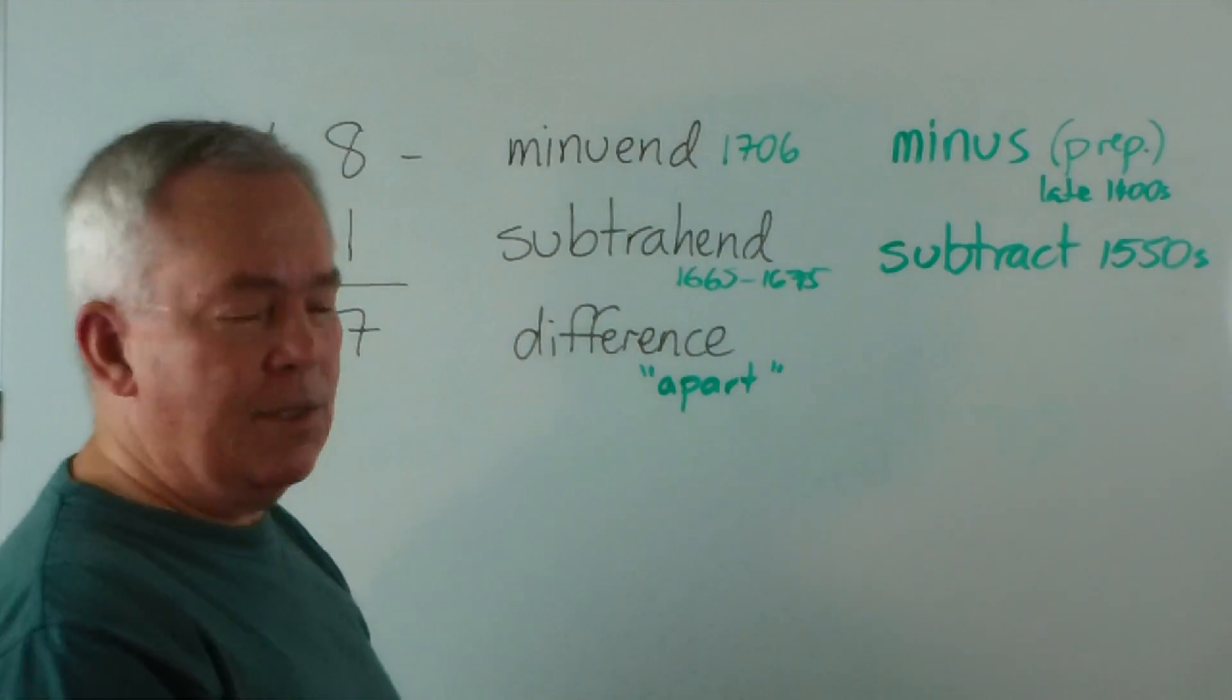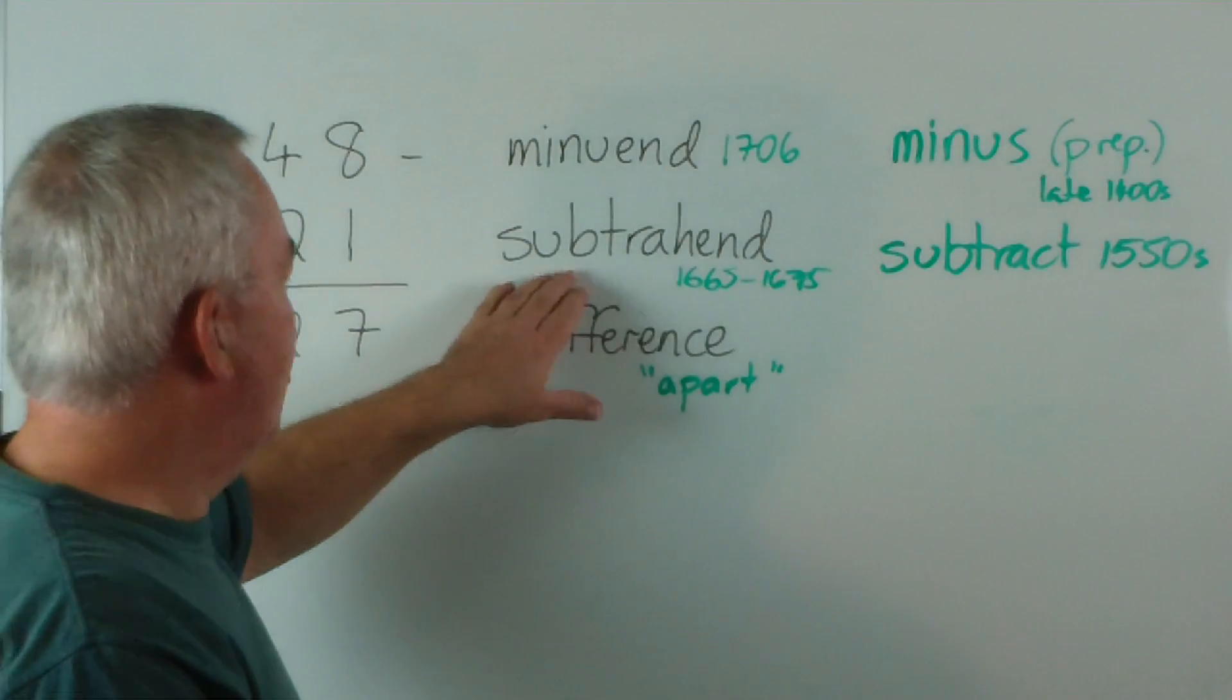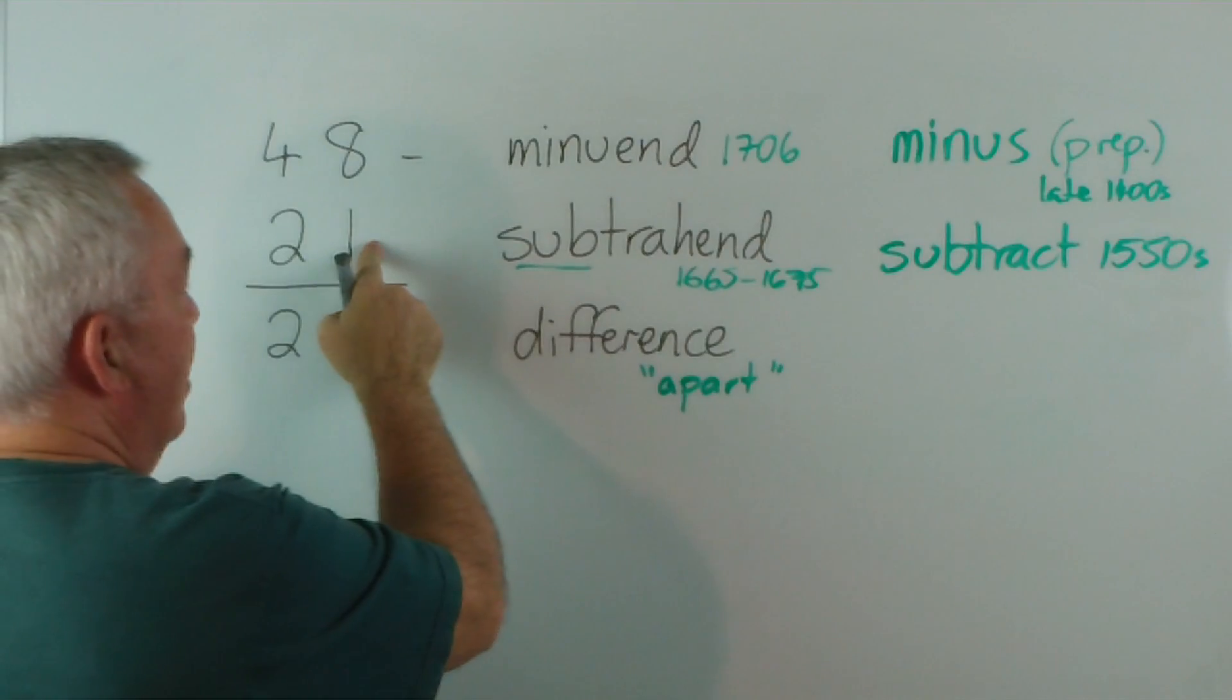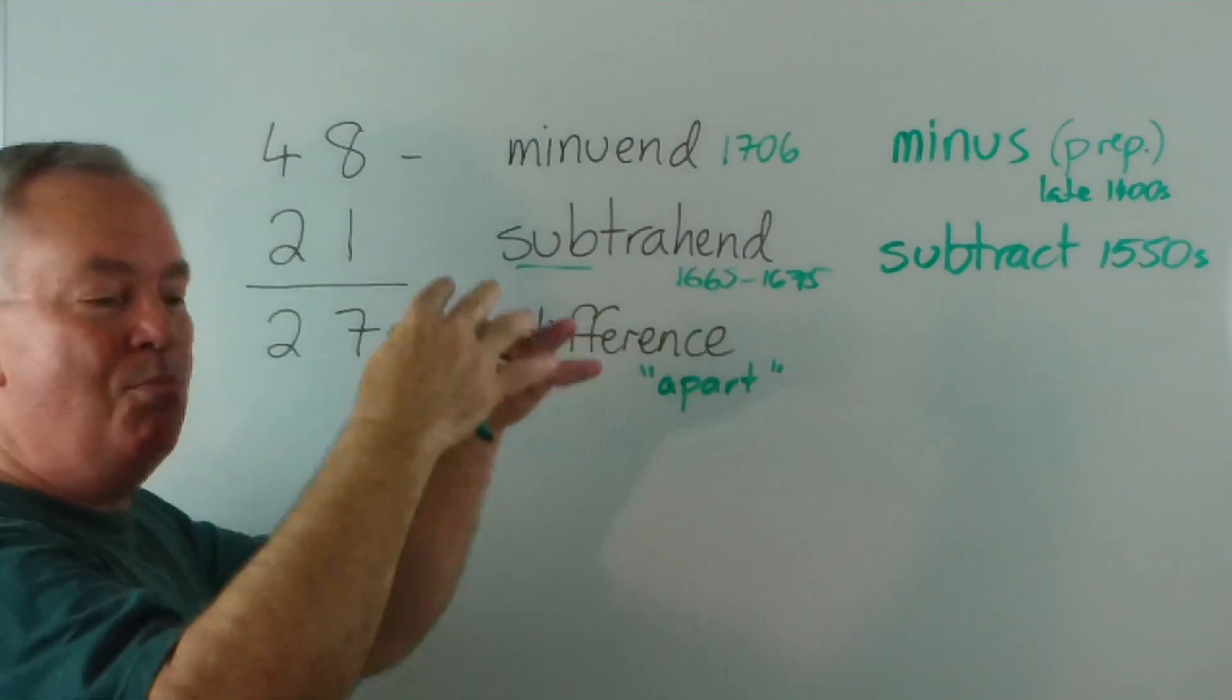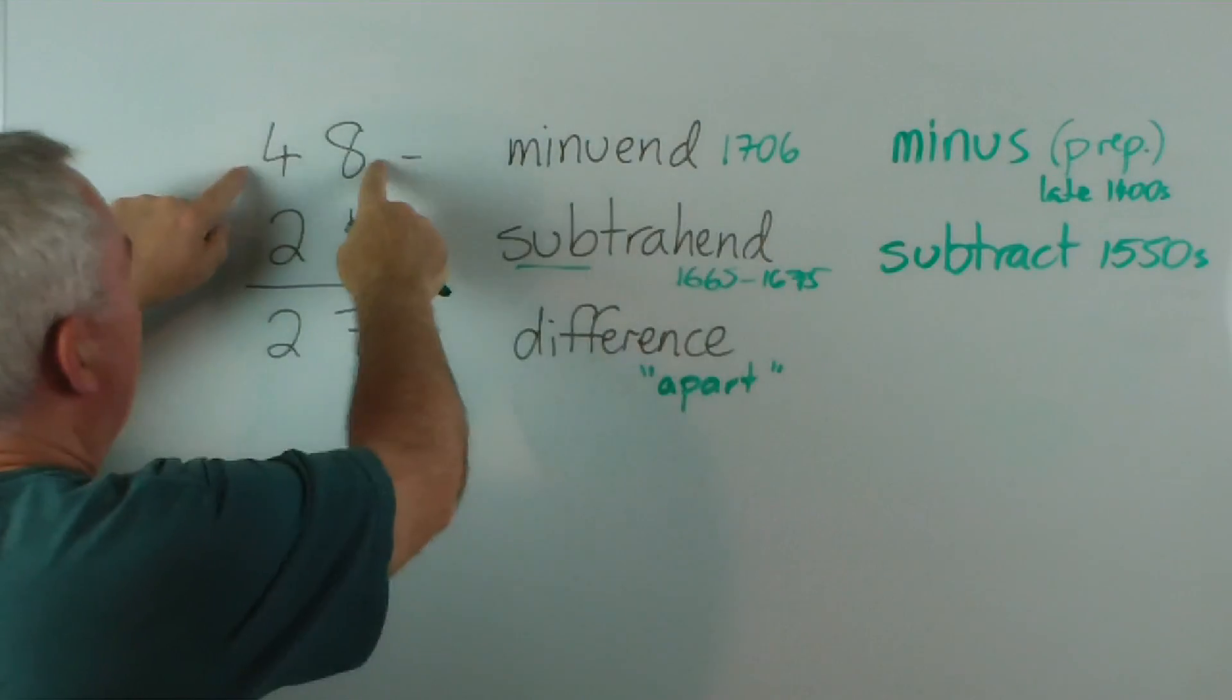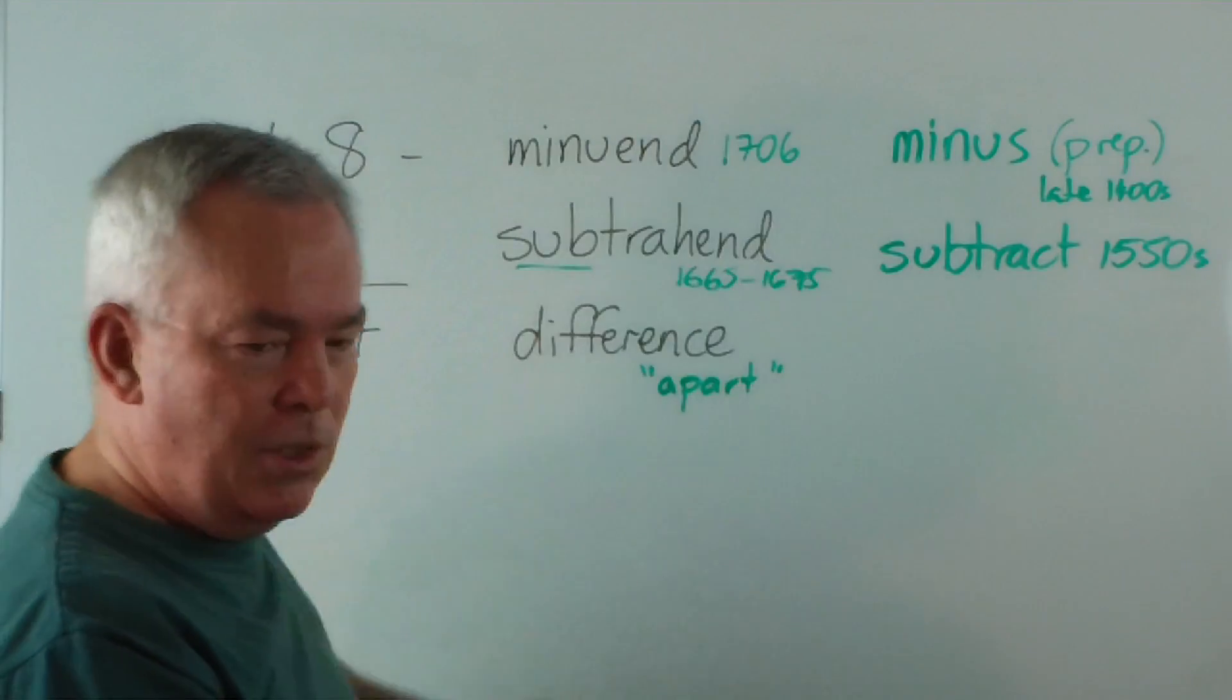So I hope that clarifies it for you. If the term sub helps you remember that it's the one underneath. And if you can remember that the minuendus numerus is the number that's got to be reduced, the original number, I hope that will help you clarify which is which.